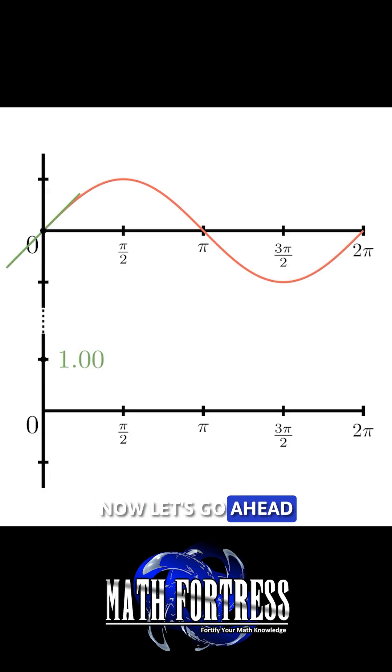Now, let's go ahead and start moving the tangent line towards pi over 2, the maximum value of the sine curve. The slope of the tangent line has a positive value, but it is decreasing and eventually attains a value of 0.